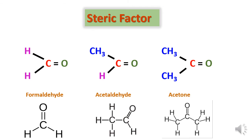You can see here the atoms or groups present around the carbonyl group. In formaldehyde, two hydrogen atoms are attached to the carbon, which are small in size. In acetaldehyde, one hydrogen and one methyl group are attached to the carbonyl carbon. The size of the methyl group is bigger compared to hydrogen. In acetone, two bulky methyl groups are present, whereas in formaldehyde, two smaller hydrogen atoms are present.